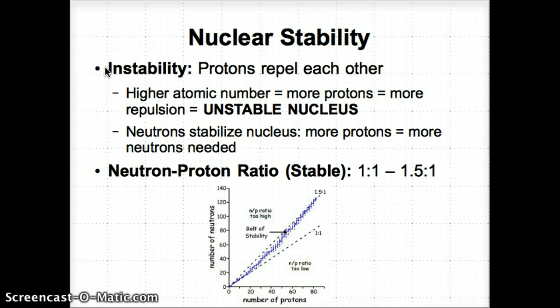To find out if a nucleus is stable or not, we need to talk about the neutron-to-proton ratio. There needs to be one neutron for every one proton, or the ratio can go up to 1.5 neutrons to one proton. For example, 1.5 to 1 would be like 3 neutrons to 2 protons.